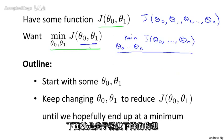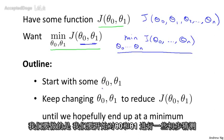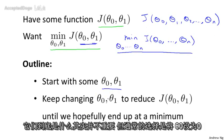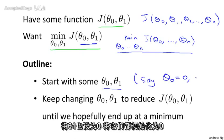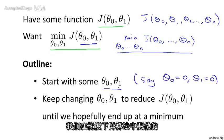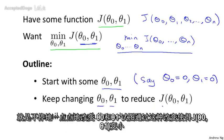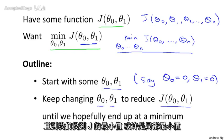Here's the idea for gradient descent. What we're going to do is start off with some initial guesses for θ₀ and θ₁. It doesn't really matter what they are, but a common choice would be to set θ₀ to 0 and θ₁ to 0 — just initialize them to zero. Then in gradient descent we'll keep changing θ₀ and θ₁ a little bit to try to reduce J of θ₀, θ₁, until hopefully we wind up at a minimum, or maybe a local minimum.